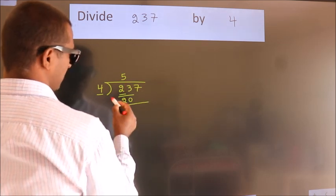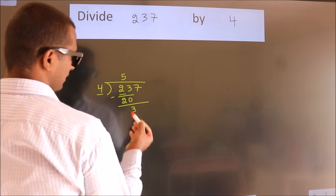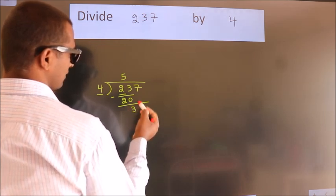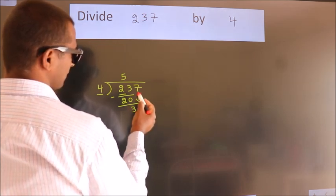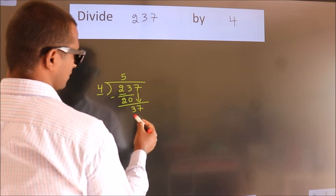Now we should subtract. We get 3. After this bring down the beside number. So 7 down. So 37.